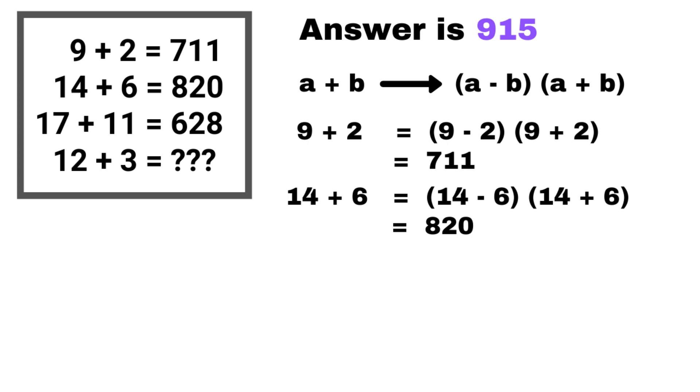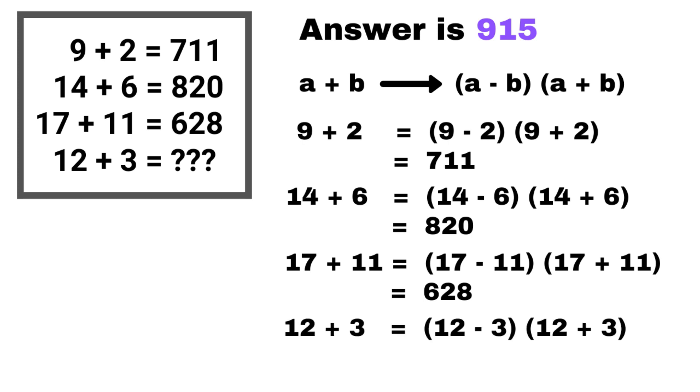The difference between the two numbers in the third line is 6 and the sum is 28. The answer is 628. In the fourth line the difference between the two numbers is 9 and the sum is 15.